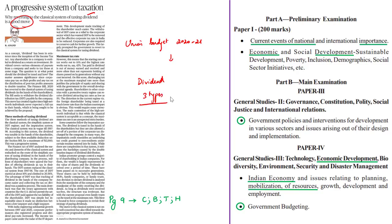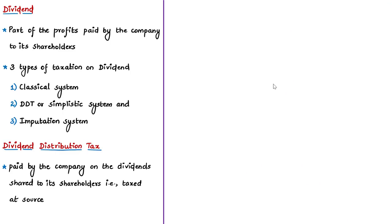The syllabus relevant to this editorial is given here for your reference. First, let us understand what dividend means. A shareholder is someone who owns shares in a company or a corporation — they own a stake in the company. When the company is making profits, a part of this profit will be distributed to its shareholders. These regular payments made by the company to its shareholders are called dividend.